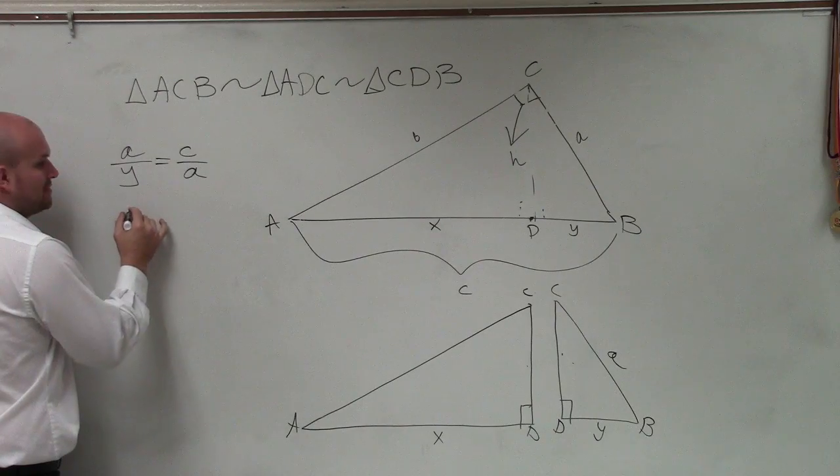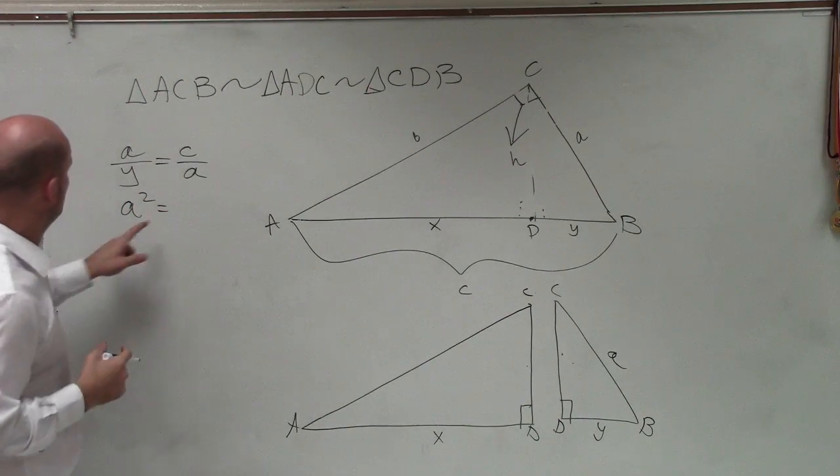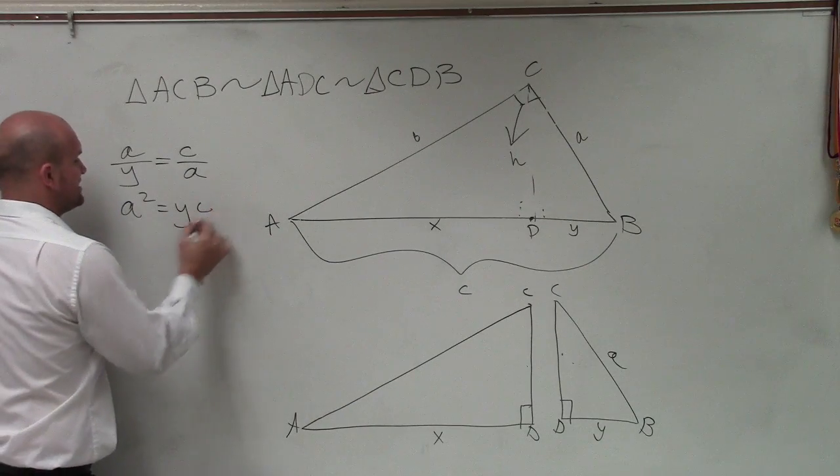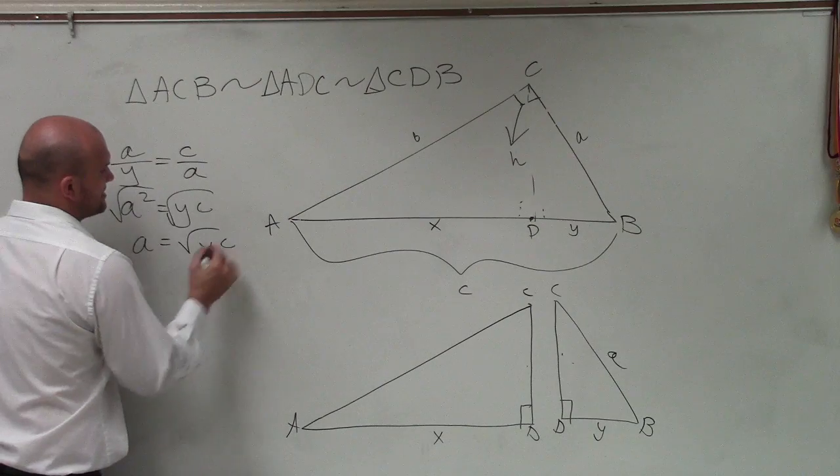Therefore, I can apply, again, cross multiplication. A squared equals y times c. Square root, square root. A equals the square root of y times c.